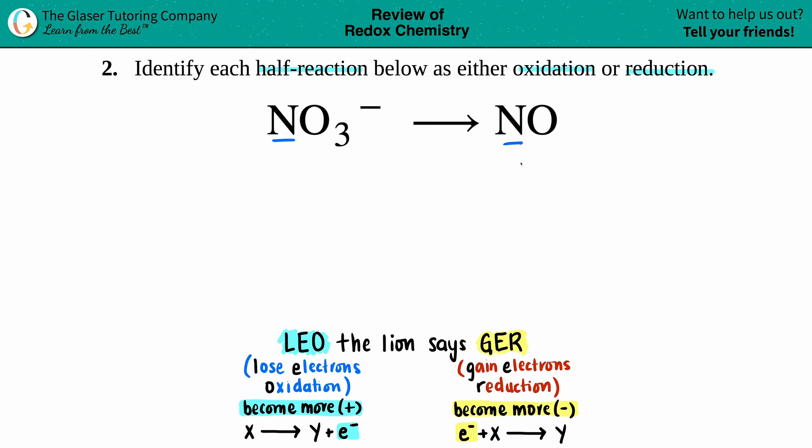You can take this half reaction and balance it as if you were doing an acidic solution question where you balance all the elements first that aren't hydrogen and oxygen, then you balance the oxygen, then you balance the hydrogen. That just takes too much time. I'm going to show you a quicker way because whether you do it in acidic conditions or whether you look at the individual elements, you'll get the same answer.